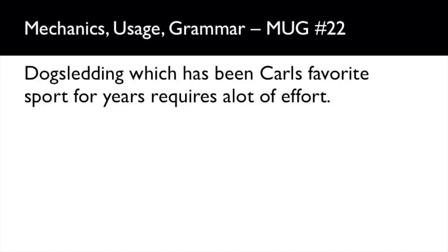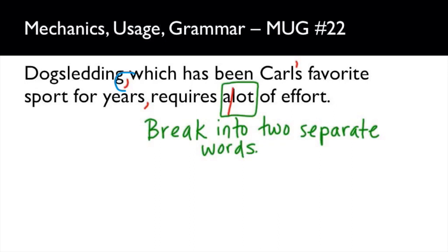I've set off the non-essential information in the middle of the sentence with commas, because we could lift it right out. The main sentence is 'Dog sledding requires a lot of effort' — that's your independent clause, it stands on its own two feet, it's a complete thought. 'Which has been Carl's favorite sport for years' is extra information — a non-essential element — separated off with commas.